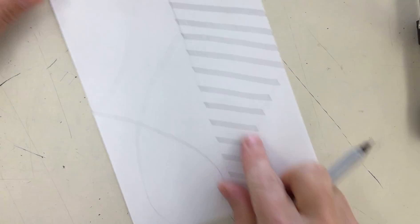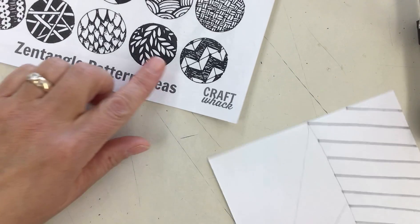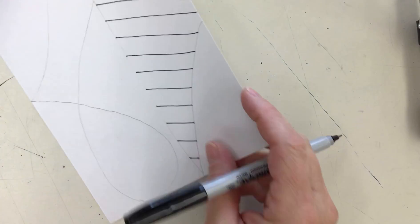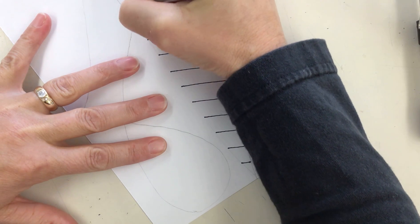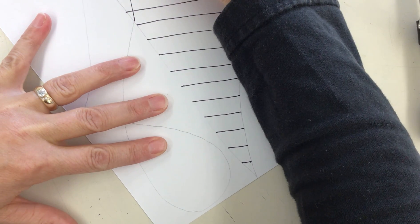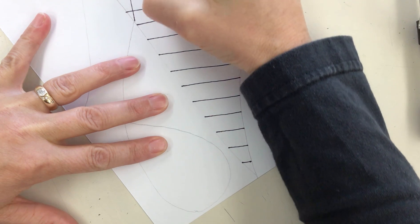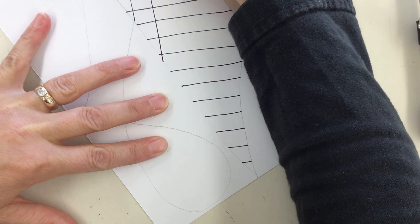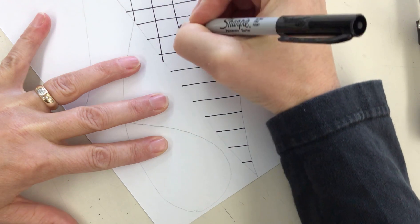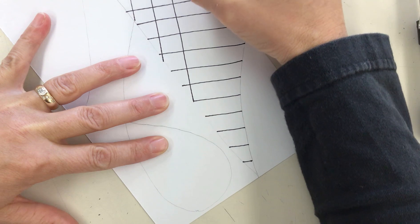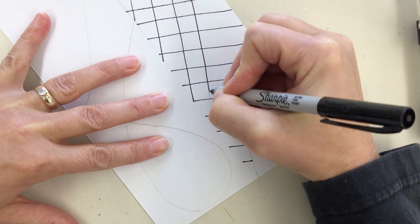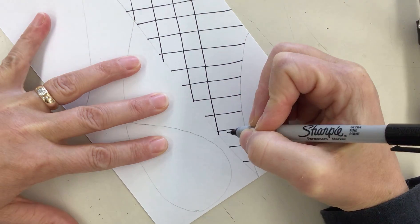So now with this grid one, I am going to cross these. So I'm making kind of like a checkerboard pattern. Just take your time with it. And again, I'm going to make sure that I am covering the entire section all the way through.